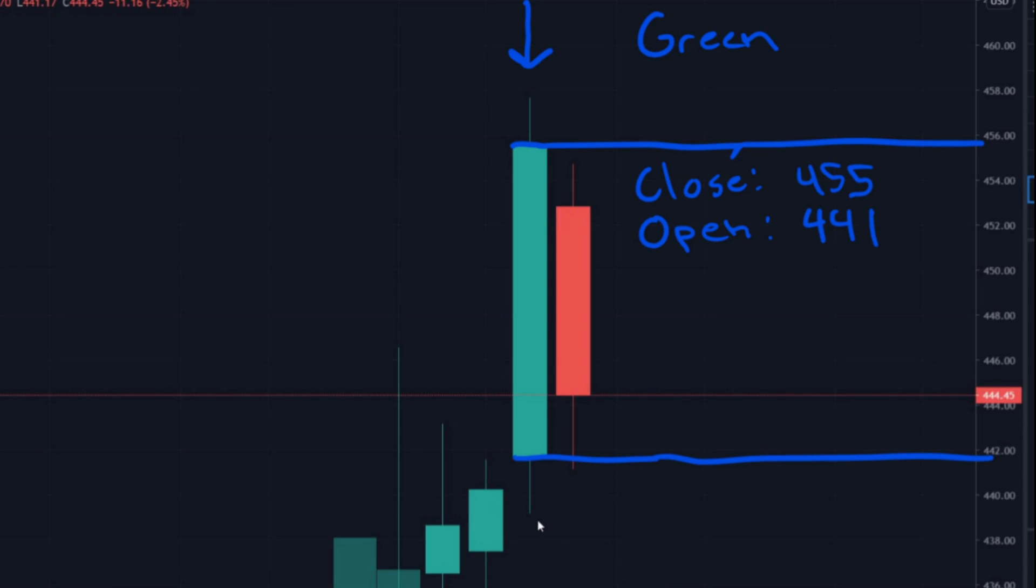The lower shadow is all the way down here. And it looks to be around, so session low, looks to be around 400 and maybe 439. And the session high, the session high is all the way up here. Almost at 458, right? 458.